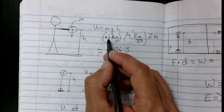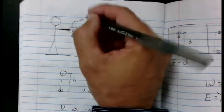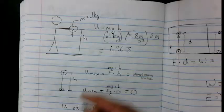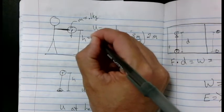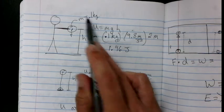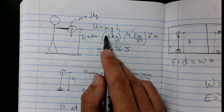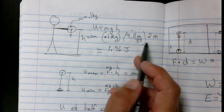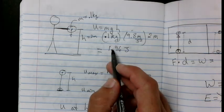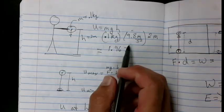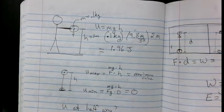So U equals mass times G times H. So if the mass was 0.1 kilogram and the height was 2 meters, we could plug these numbers into this equation, and then we get 0.1 times 9.8 times 2. We do all of that math, and we get 1.96 joules. So that's how much energy it has if I just hold it above the ground.